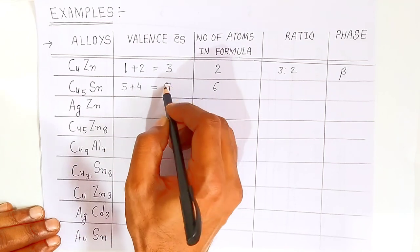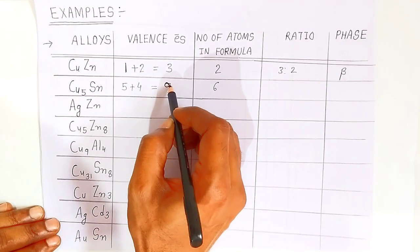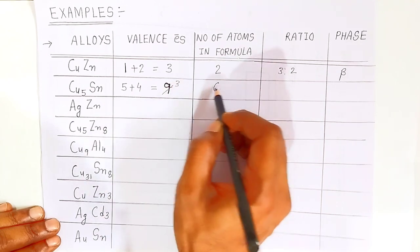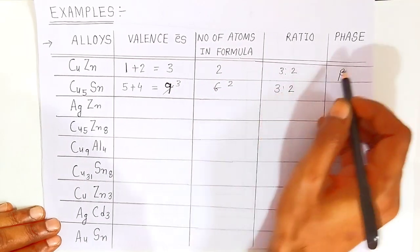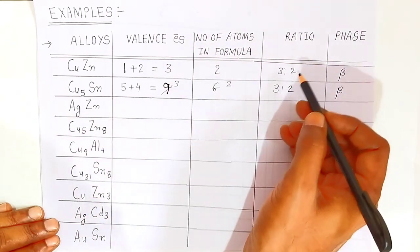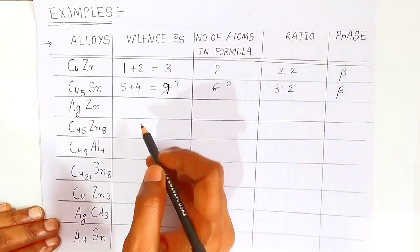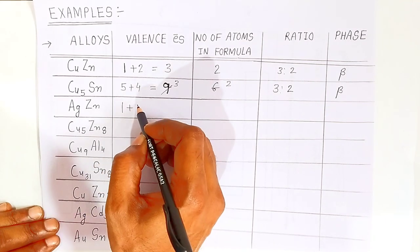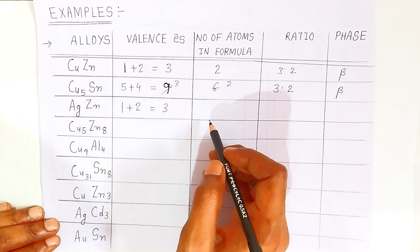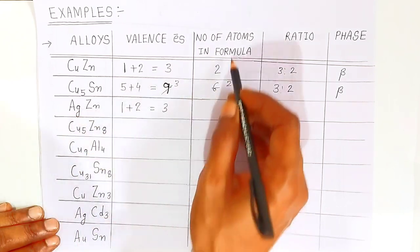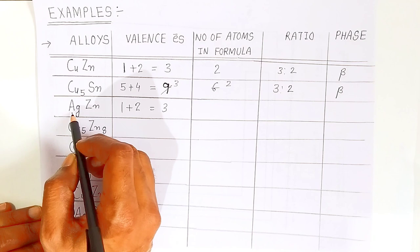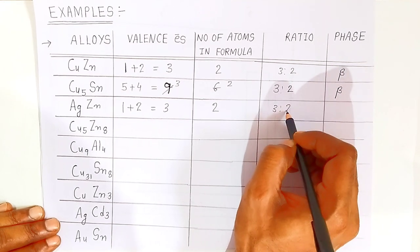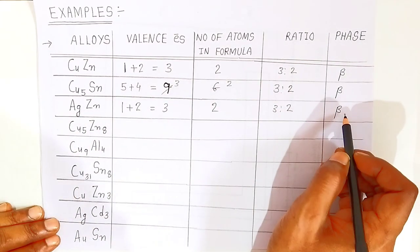For copper-stannous alloy, copper has 5 atoms so valence electrons are 5, and stannous has valence electron 4, so total is 9 valence electrons. Total number of atoms: 5 copper and 1 stannous gives 6. The ratio is 9/6, which simplifies to 3/2 — also beta phase. For silver-zinc alloy: silver valence electron 1, zinc 2, total 3; atoms 1+1=2; ratio 3/2 — also beta phase.